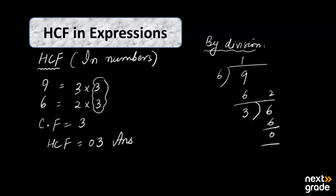The answer is 0. After applying the division method, the last divisor is the HCF. The last divisor is always what we use to find the HCF, so when you apply this method, the answer is 3.